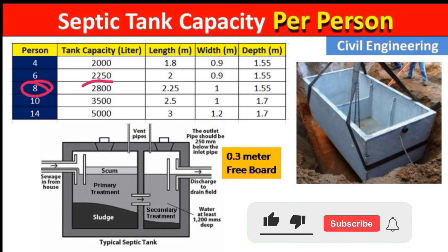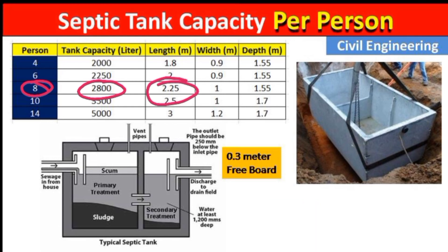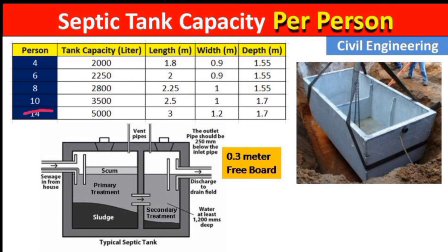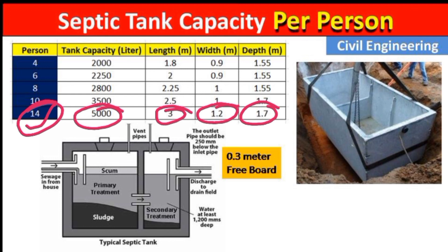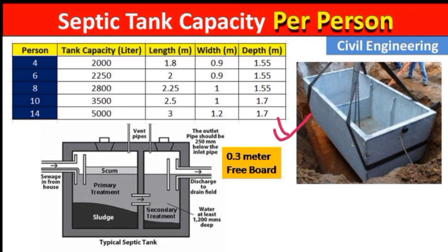For eight persons, the tank capacity should be 2800 liters, length 2.25 meters, width 1 meter, and depth 1.55 meters. For ten persons, the capacity should be 3500 liters, length 2.5 meters, width 1 meter, and depth 1.7 meters. For fourteen persons, the capacity should be 5000 liters, length 3 meters, width 1.2 meters, and depth 1.7 meters. This is the thumb rule generally used for residential buildings.